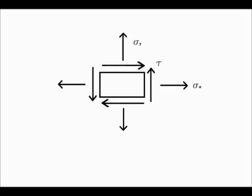Sigma x is trying to pull the body — it is acting in a tensile manner, so sigma x is greater than zero. Similarly, sigma y is also acting to pull the body, so it is again greater than zero. To know the sign of tau, we see that on the positive face of the body — the face facing the positive x-direction — it is being acted upon by a force in the direction of the positive y-axis. Positive face into positive direction gives positive, so tau is also greater than zero.